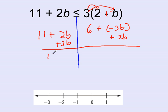So I do my math here. I get 11 plus 5b is less than or equal to. And then over here, I'm going to have just 6.